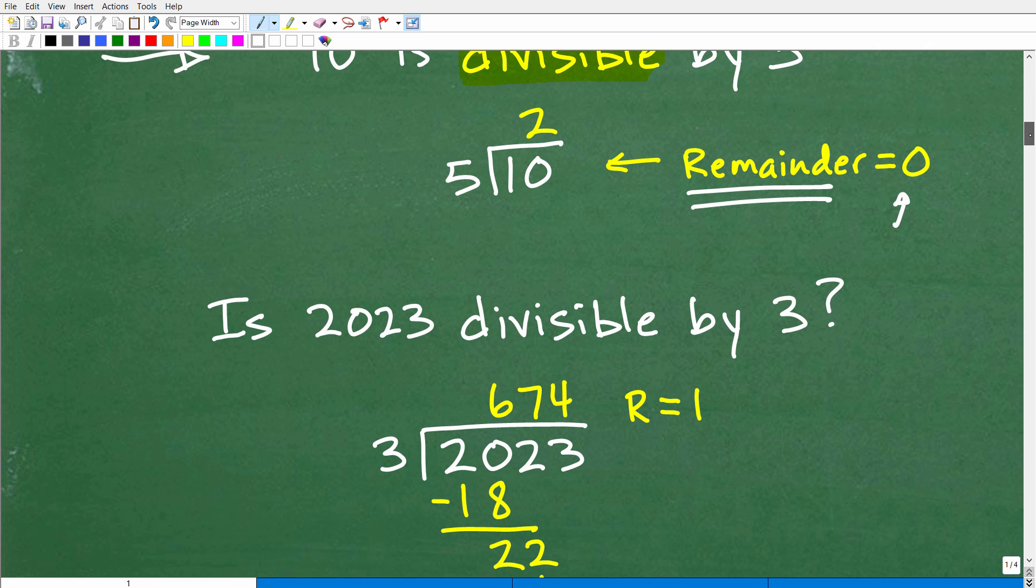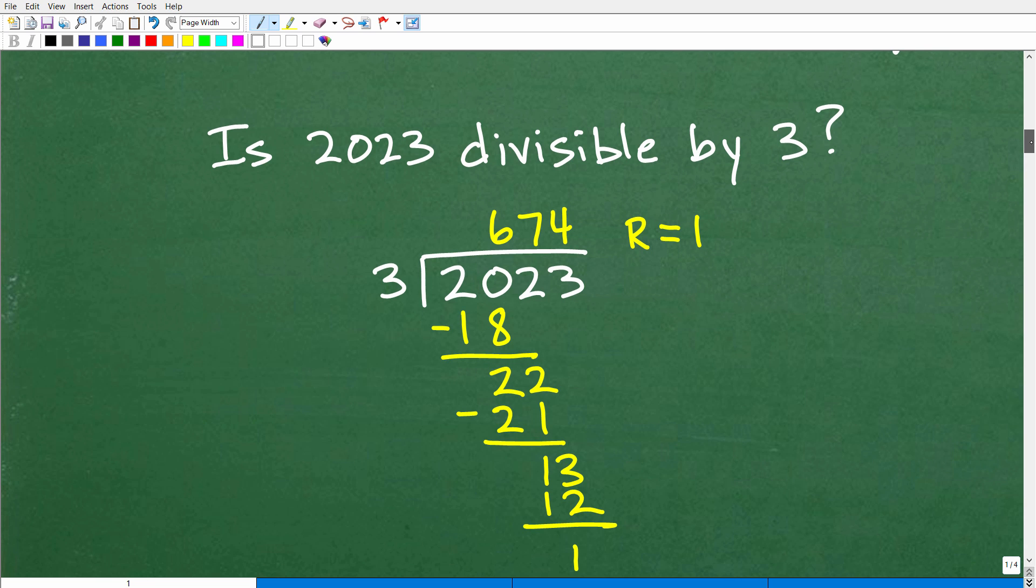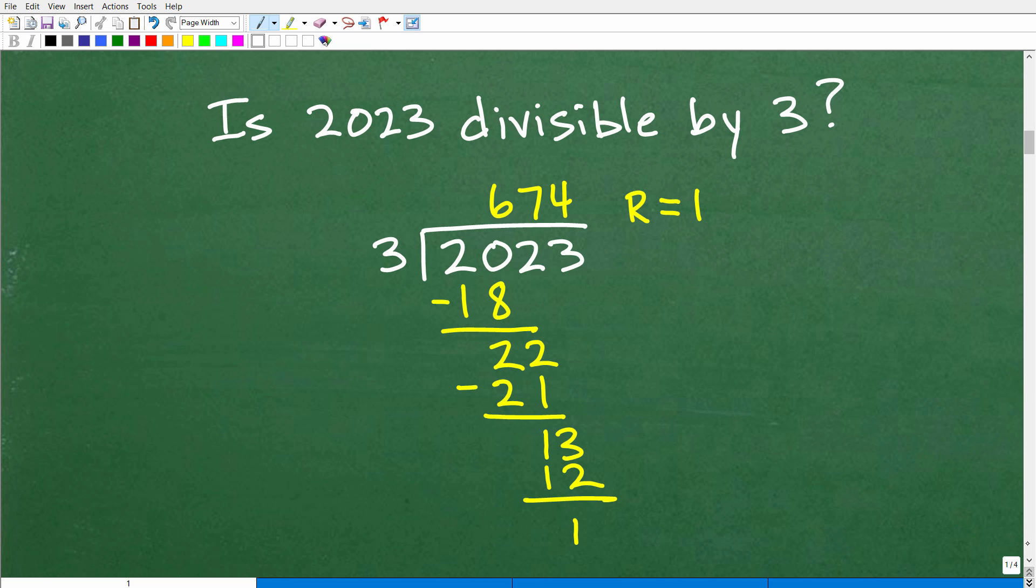Let's answer this question now. Is 2023 divisible by 3? Basically the definition is, hey, if we can divide 2023 by 3 and have a remainder of 0, then it is. If we have a remainder, then it is not. So you can see here, I did some basic old school arithmetic and we do get a remainder. We got a remainder of 1. So that means there is a remainder. It's not a remainder of 0. So that tells me that, yes, in fact, 2023 is not divisible by 3.